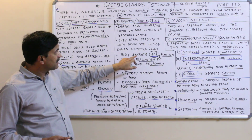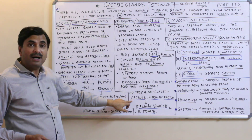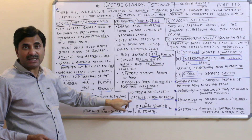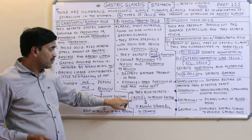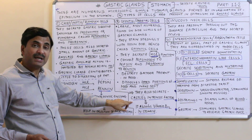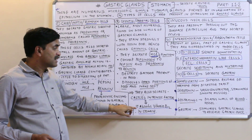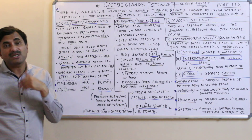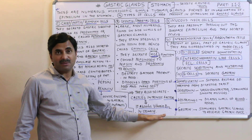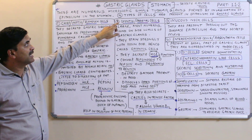Oxyntic cells also secrete a very important factor known as the Castle intrinsic factor. The Castle intrinsic factor functions to absorb vitamin B12 (cyanocobalamin) in the stomach. This makes the oxyntic cells the most numerous and functionally critical cells in the epithelium of the gastric gland.